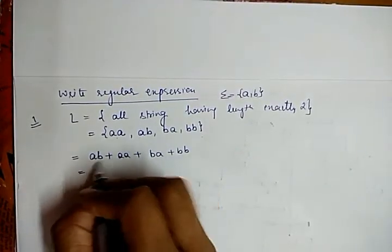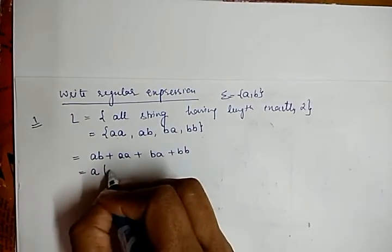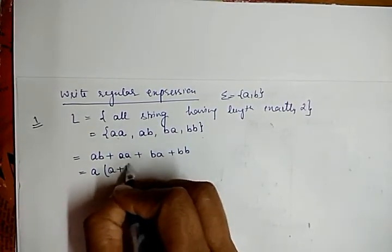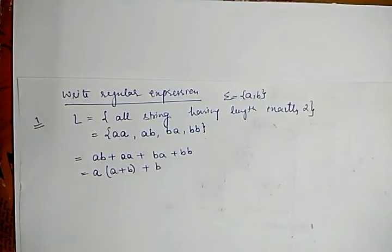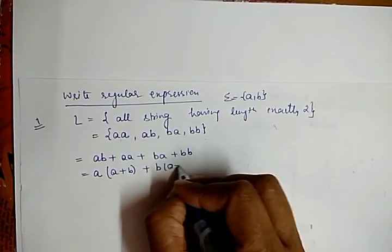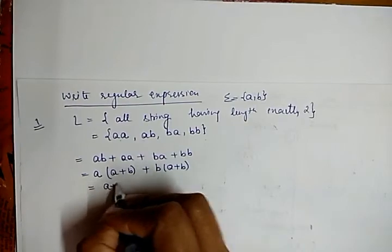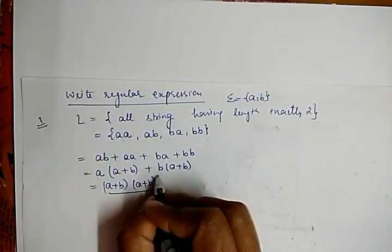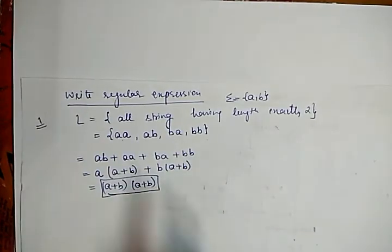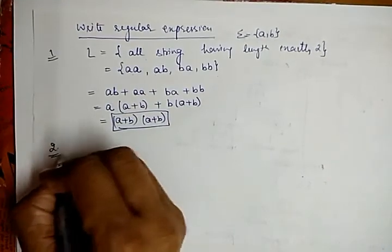For these expressions, if we take 'a' as common from the first two, we get a(a+b), and if we take 'b' as common from the last two, we get b(a+b). So the final regular expression is (a+b)(a+b), which is the regular expression for all strings of length exactly two.